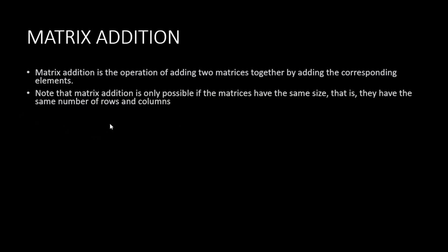Namaskar. Now we are familiar with vectors and matrices. Let's move toward our next topic, which is matrix addition. Matrix addition is the operation of adding two matrices together by adding the corresponding elements. Matrix addition is only possible if the matrices have the same size — that is, they have the same number of rows and columns. The size of a matrix is defined by the number of rows and columns it has.